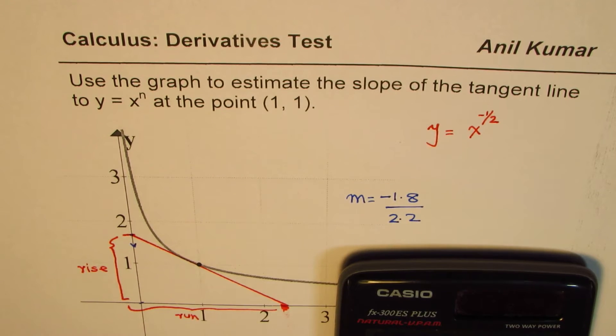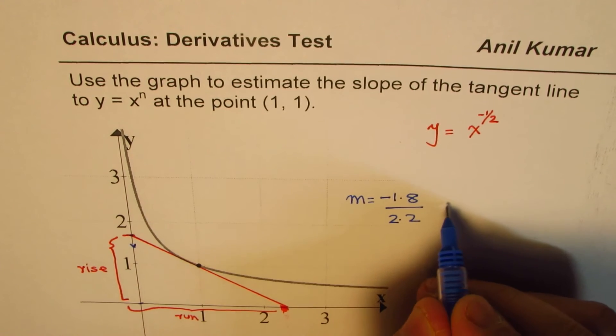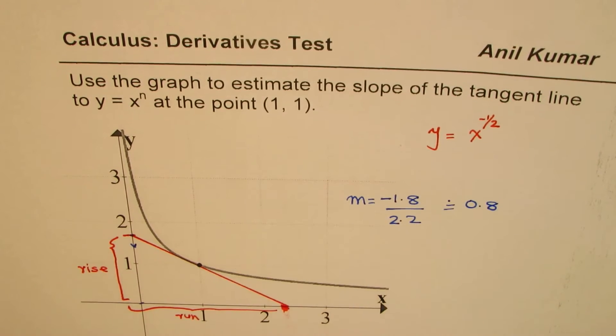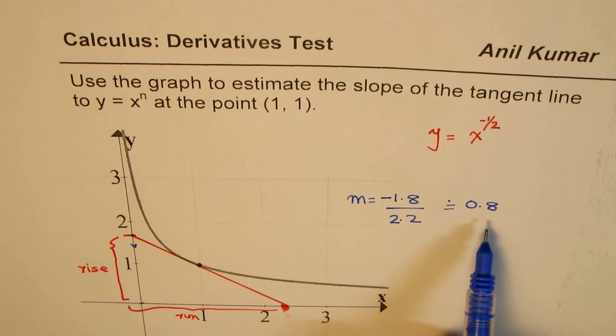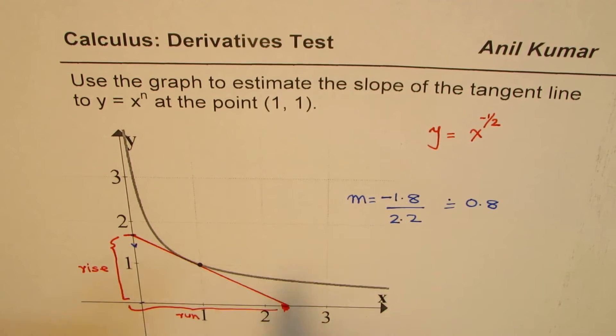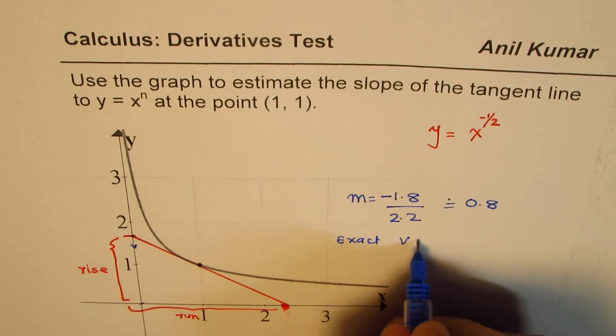And that gives you in decimals say it's 9 over 11 or 0.81, or you could approximate this to 0.8. So you can say slope of the tangent line for the given graph is this. So I hope that is how it should have been done.